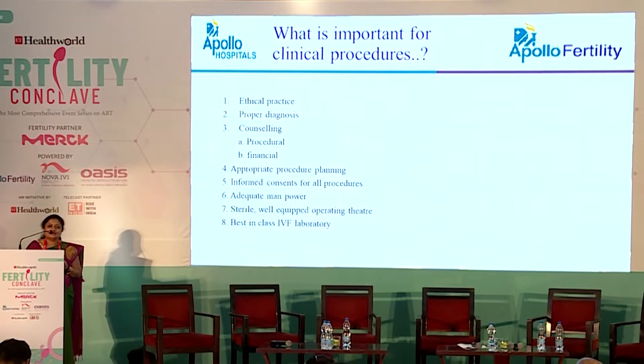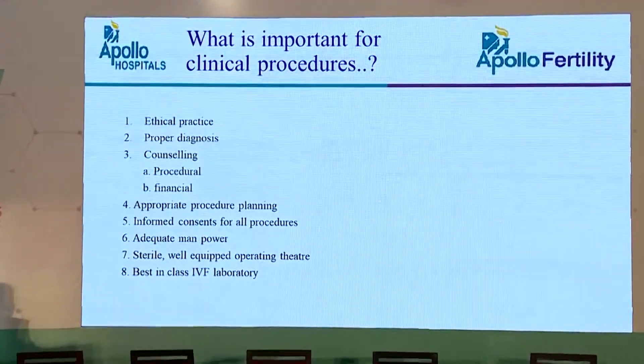What is important for clinical procedures? Ethical practice comes first. Proper diagnosis is essential — infertility has always been underdiagnosed. We see patients coming after three, five, or ten years of married life without a baby, having visited different clinics without a proper diagnosis of the actual cause of infertility. Counseling — both procedural and financial — has to be properly given. Appropriate procedure planning, informed consent for all procedures, adequate manpower, sterile well-equipped operating theatres, and a best-in-class IVF laboratory are all essential.